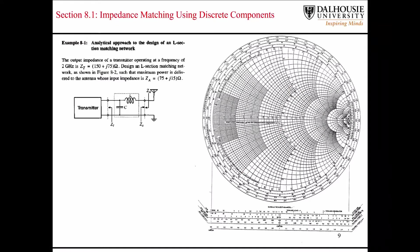Now let's take a look at one of the examples from the book. Our goal here is to match the output impedance of a transmitter to the input impedance of an antenna, where the impedance of the antenna is given by this value, and the output impedance of the transmitter is given by this value.